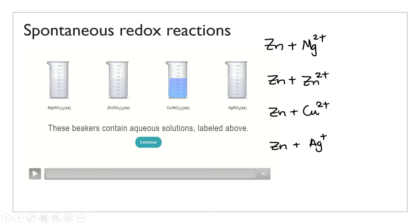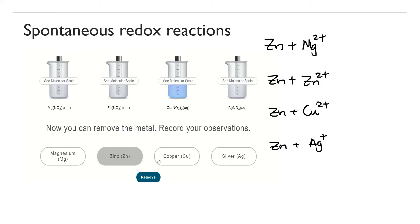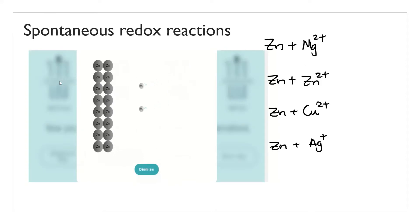I'm going to show you how you can interact with the simulation. You click continue and then you'll be able to pick the metal for the test. If I select zinc, it gets added and you can select the molecular scale to observe what happens. In this case you can see that the magnesium ions don't react with zinc — they come into contact with each other but just bounce off. There's no reaction.